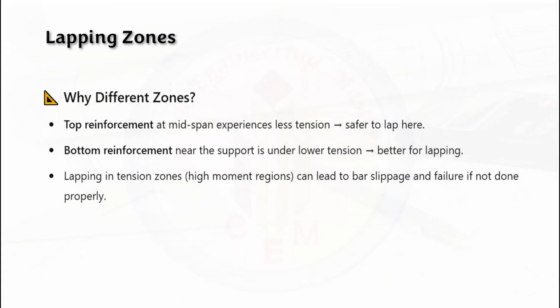Why do we have this kind of different lapping zones? For top reinforcement, mid-span experiences less tension, so that is the safe place to lap. In bottom reinforcement, near the support is under lower tension, so that is the best place for lapping. Lapping in tension zones (that is, high moment regions) can lead to slippage of bar and failure if not done properly. This is why we have different lapping zones in beams.